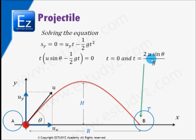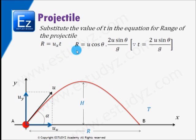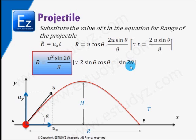Now let us substitute the value of t into the equation for the range of the projectile. R equals ux·t. Substituting t equals 2u sin theta over g, and using the trigonometric identity 2 sin theta cos theta equals sin 2 theta, we get the range as R equals u squared sin 2 theta over g.